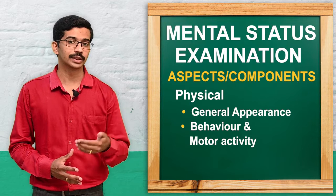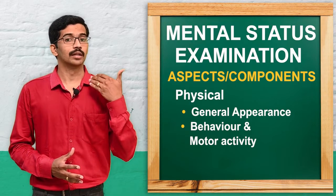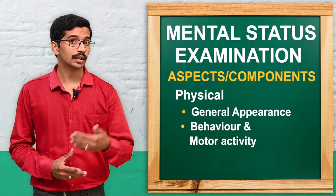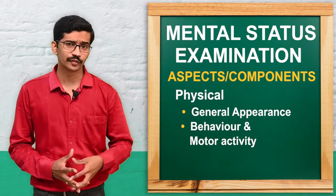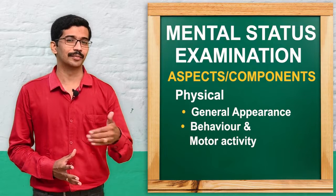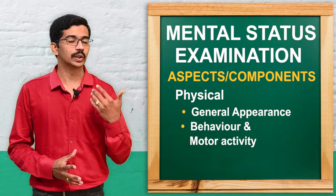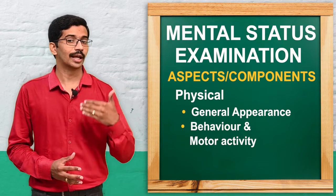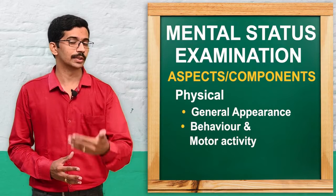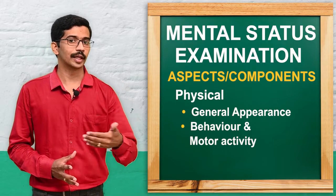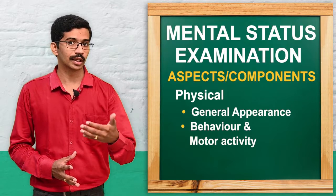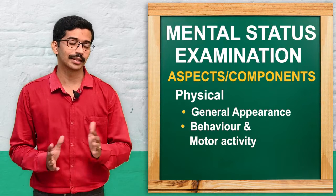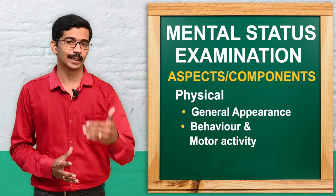For example, a manic patient will be wearing bright color dresses and bright color makeup. In contrast, a depressive or schizophrenic patient may have poor personal hygiene and be wearing torn clothing. Psychomotor activity is increased in the manic patient and may be reduced in the depressive or schizophrenic patient. Stereotypic movements and echopraxia — imitation of movements — can also be observed with a schizophrenic patient. That covers the physical component of mental status examination.